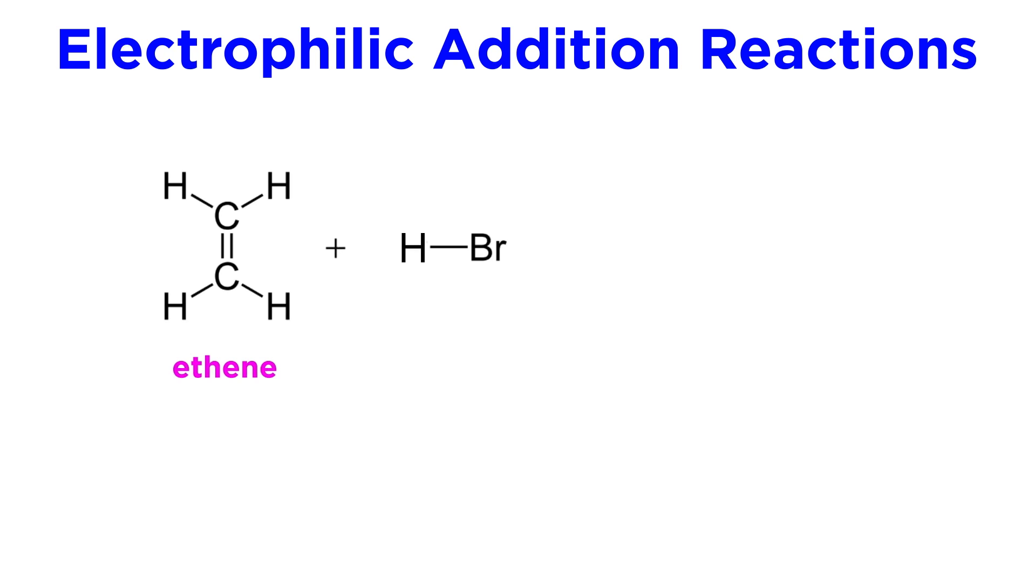The pi bond reacts with some electrophile, resulting in the addition of two groups to the molecule, one on each of the carbons that were previously participating in the pi bond.